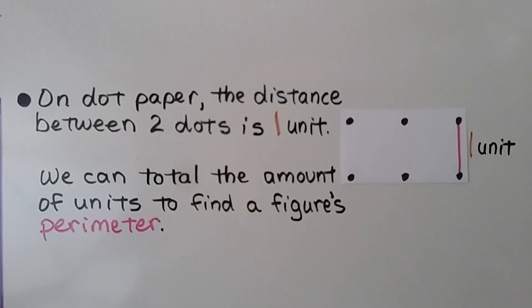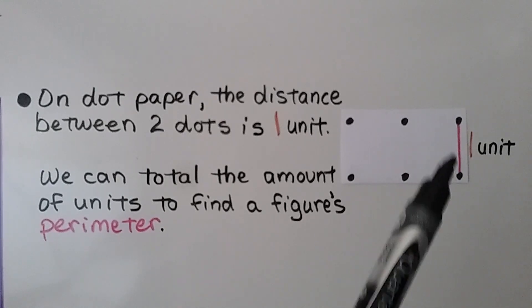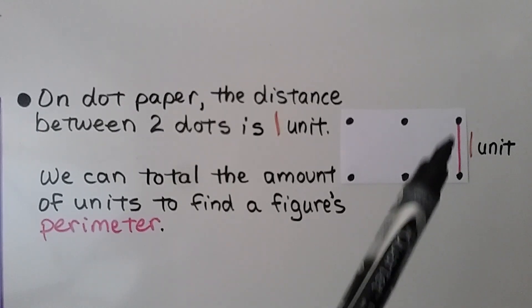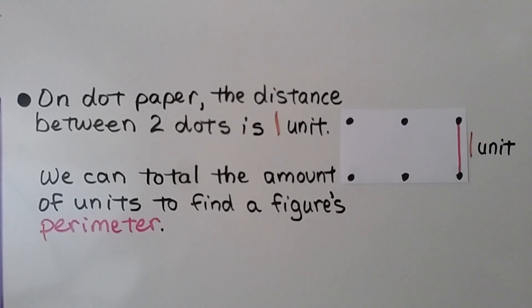On dot paper, the distance between two dots is one unit. We can total the amount of units to find a figure's perimeter.